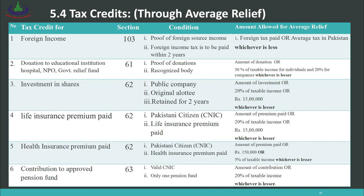Number 2: Donation to an educational institution, hospital, NPO, or government relief fund under Section 61 — if you donate to a recognized body and have proof of donation, the amount eligible for tax credit is the lesser of the amount of donation or 30% of taxable income for an individual (20% for a company). This eligible amount is then put through the average relief formula to calculate the actual tax credit.